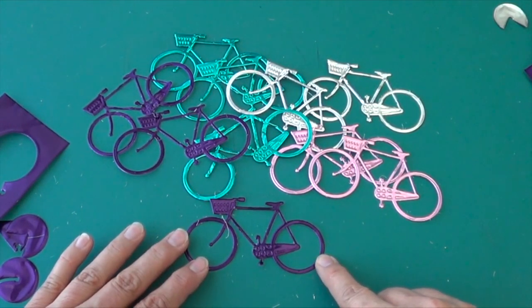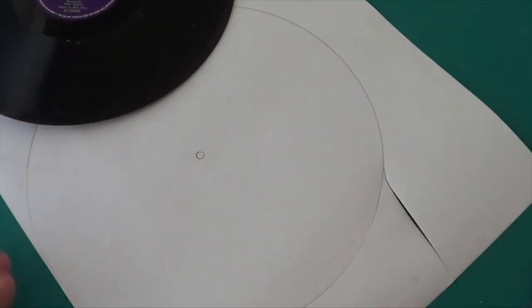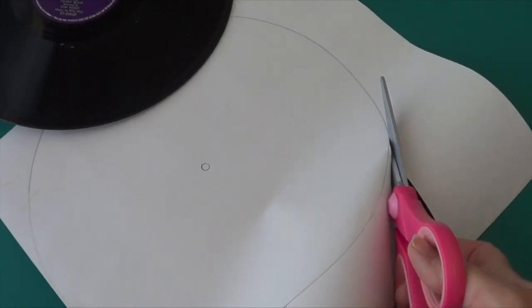We're going to use two each of three different colors for the clock. I used a nice white paper that had a metallic sheen for the clock face, and the foil colors of the bicycles are going to really pop against it.